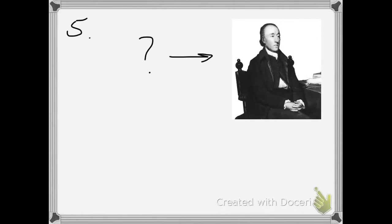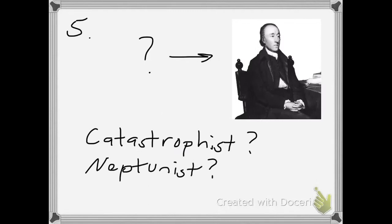Question number five: who is this fellow right here and what was his major contribution to geology? Was he a catastrophist and what does it mean to be a catastrophist? Was he a neptunist, or do you think that he came up with the idea of uniformitarianism? What is this idea and what is the modern name for uniformitarianism?